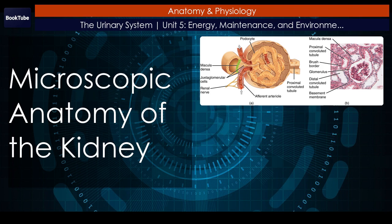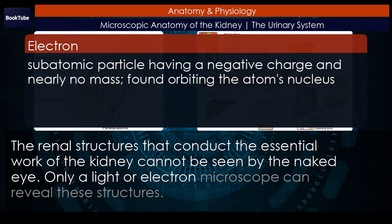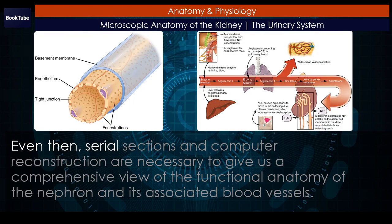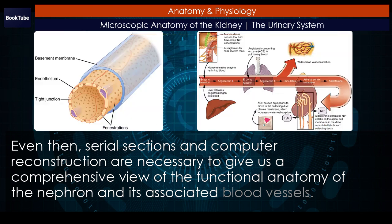Microscopic anatomy of the kidney. The renal structures that conduct the essential work of the kidney cannot be seen by the naked eye. Only a light or electron microscope can reveal these structures. Even then, serial sections and computer reconstruction are necessary to give us a comprehensive view of the functional anatomy of the nephron and its associated blood vessels.